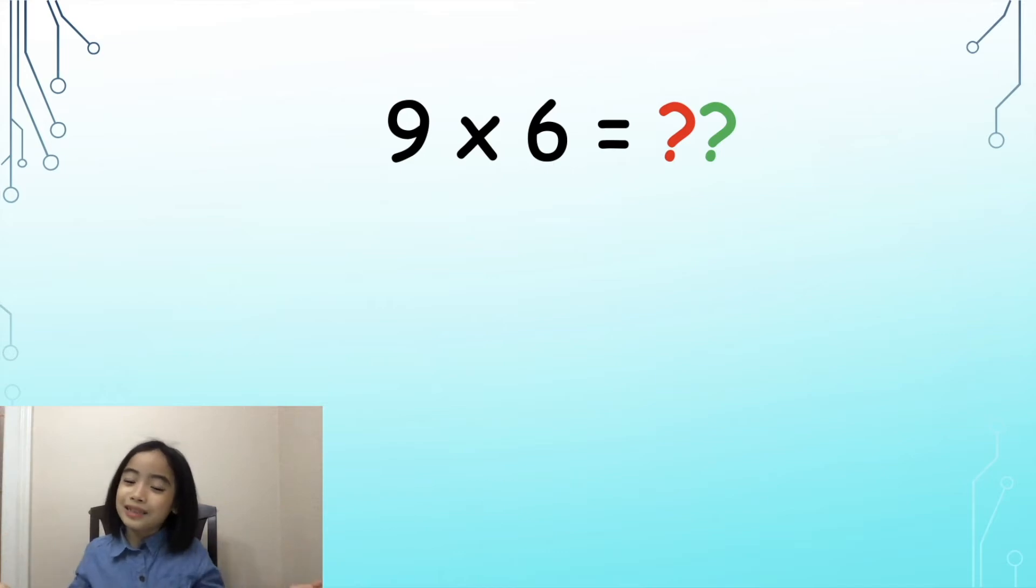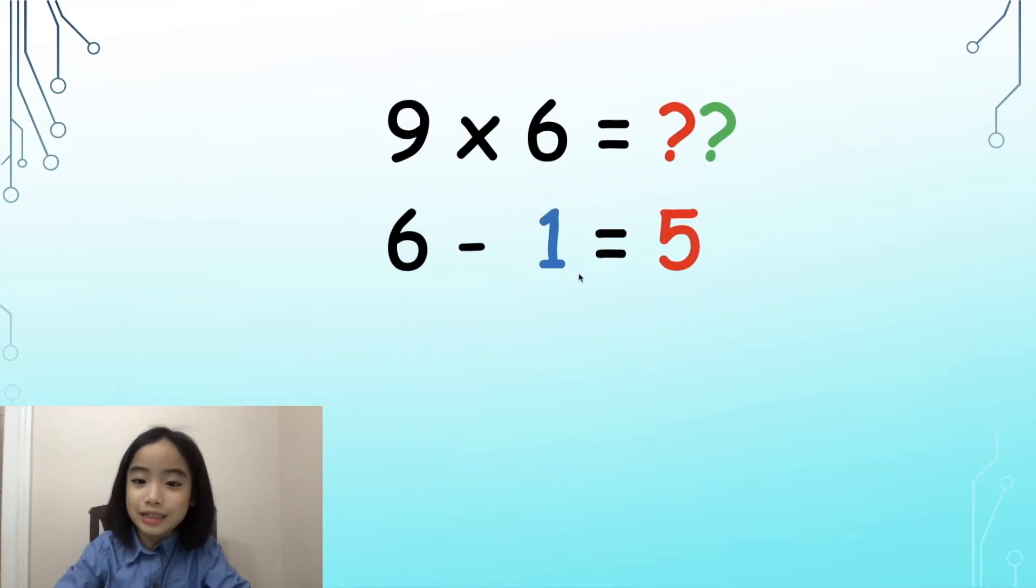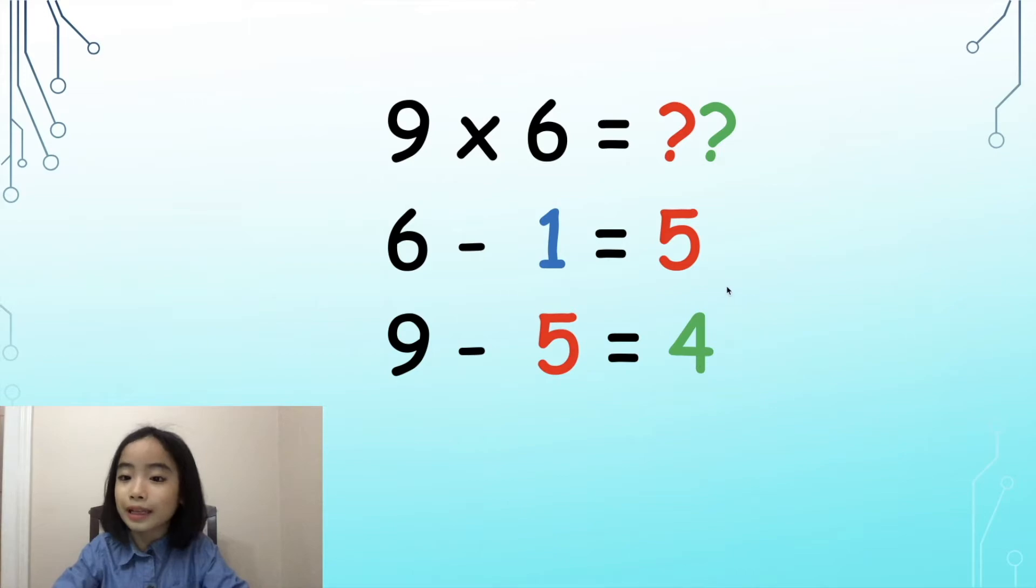Does this method apply to 9 times 6? Well, let's see. 6 minus 1 equals 5, so we put the 5 in the 10s position. 9 minus 5 equals 4, so we put the 4 in the 1s position. The answer is 54. This works!